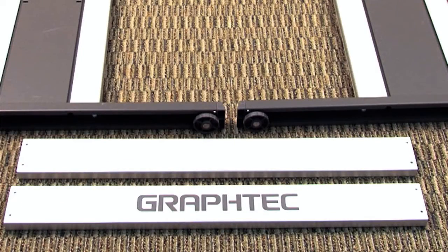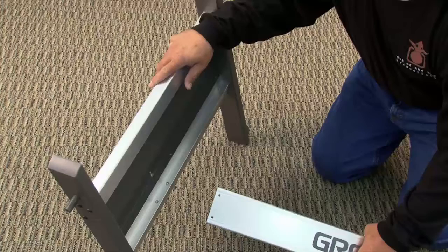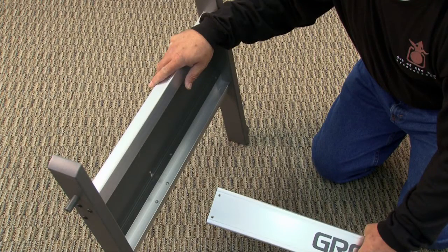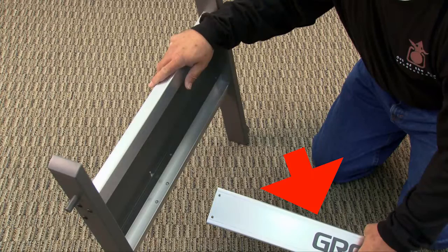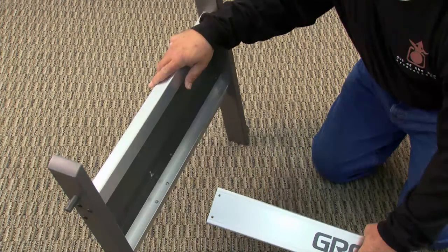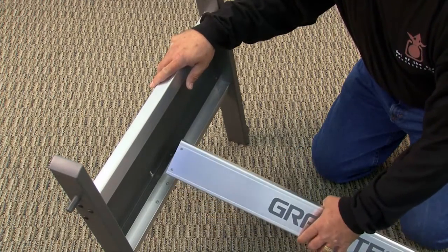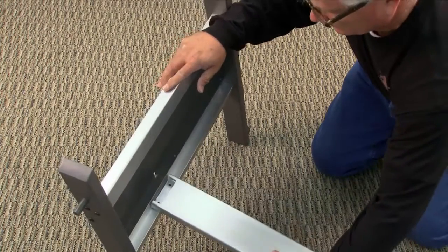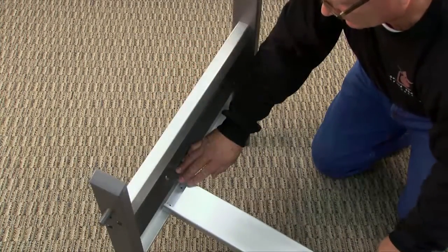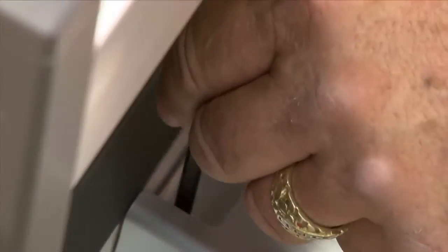Next, locate the two cross arms, one with a Graphtec label and one without. Take the cross arm with the Graphtec label and attach it to one of the side panels. To do this, lay one side panel on its side, making sure that the Graphtec label is facing toward the front. Mount the screws using the Allen wrench that was provided, but do not tighten the screws just yet.